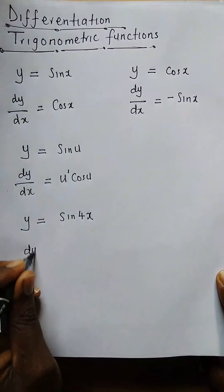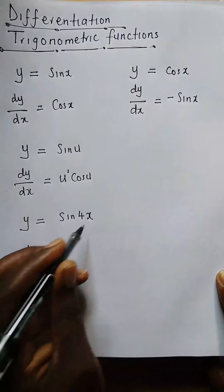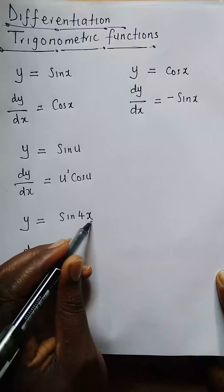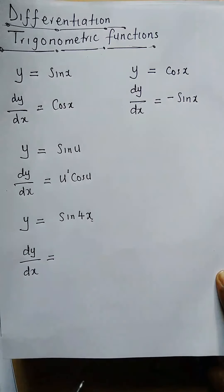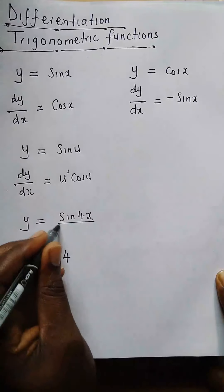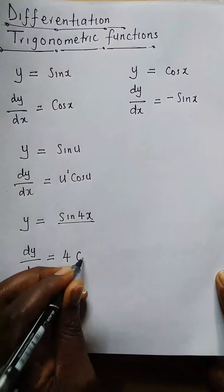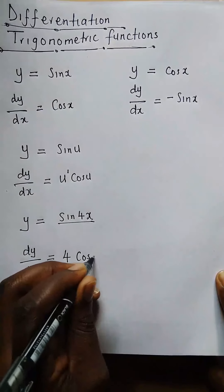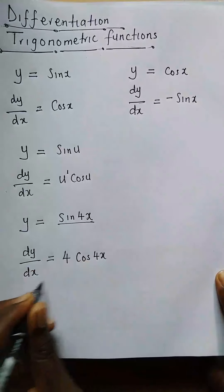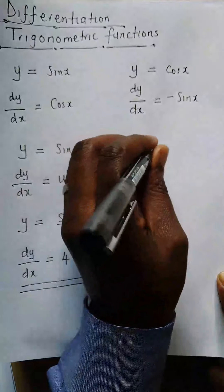Let's say we have y = sin(4x). What would be our dy/dx? In this case, our u is 4x. We first differentiate u with respect to x — the derivative of 4x is just 4. Then the whole thing gives us 4·cos(4x).